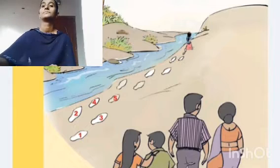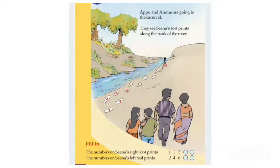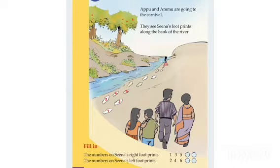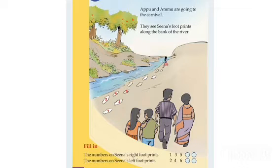Here, Appu and Ammu are going to the carnival. They see Sima's footprints along the bank of the river. The footprints are numbered: the right footprints are numbered 1, 3, 5 — so the next numbers should be 7 and then 9. The left footprints are numbered 2, 4, 6, and 8, and if there is another footprint, it will be 10.